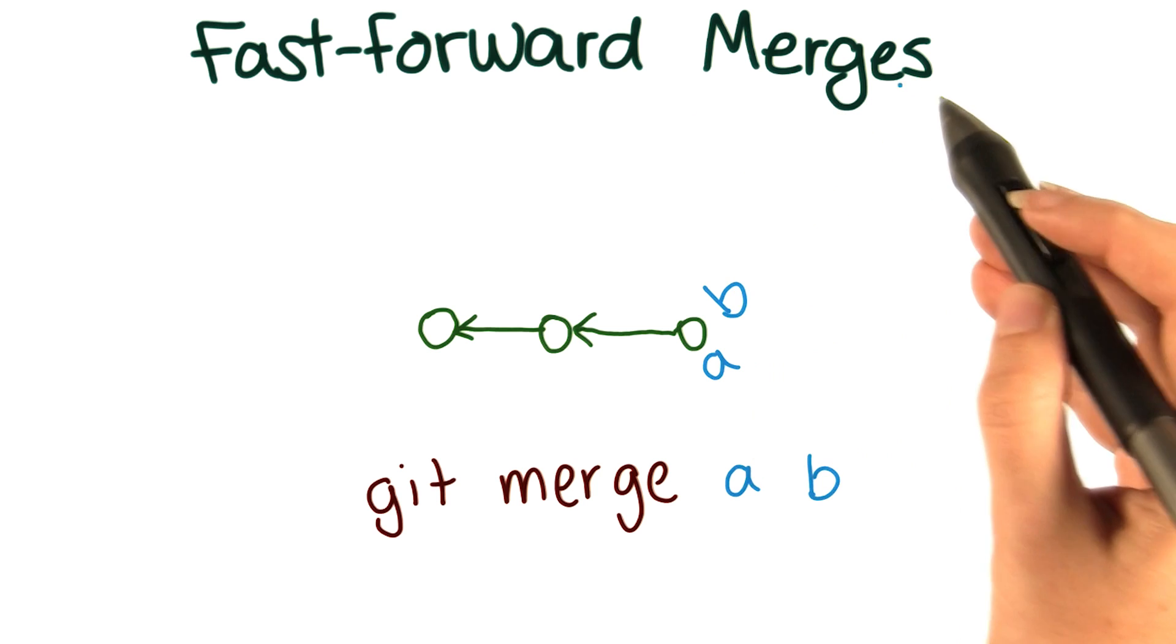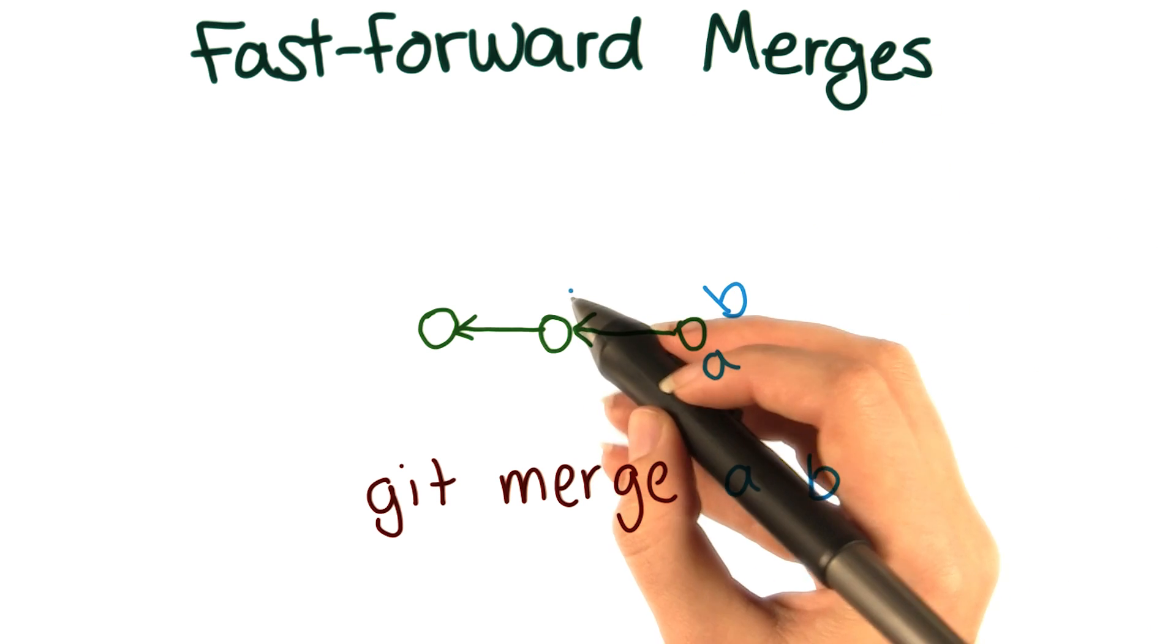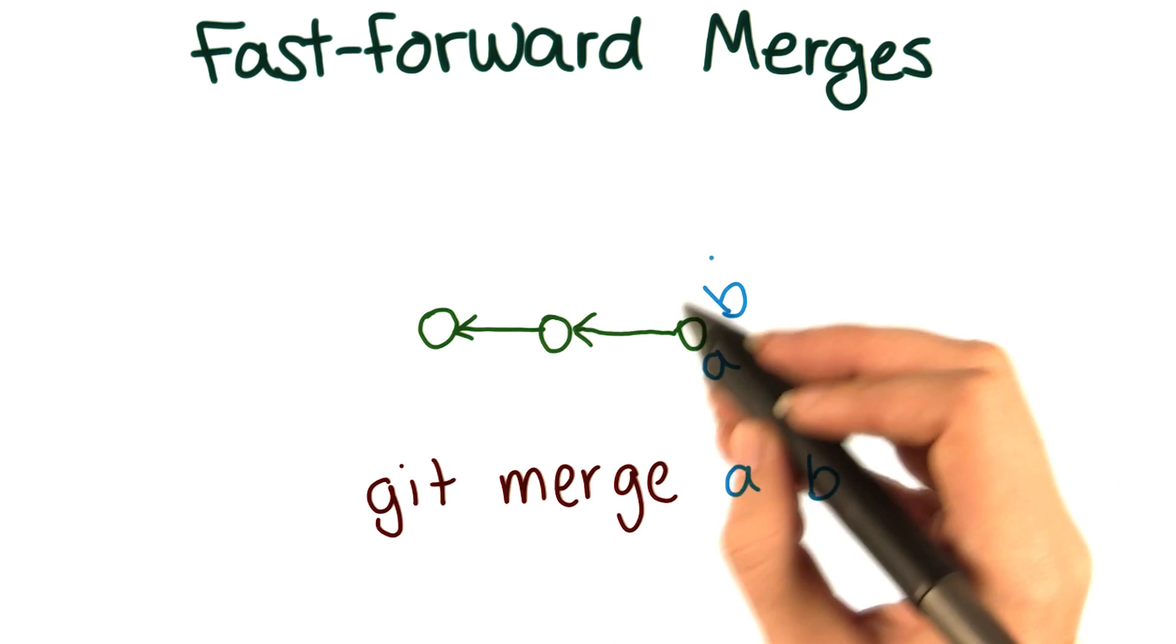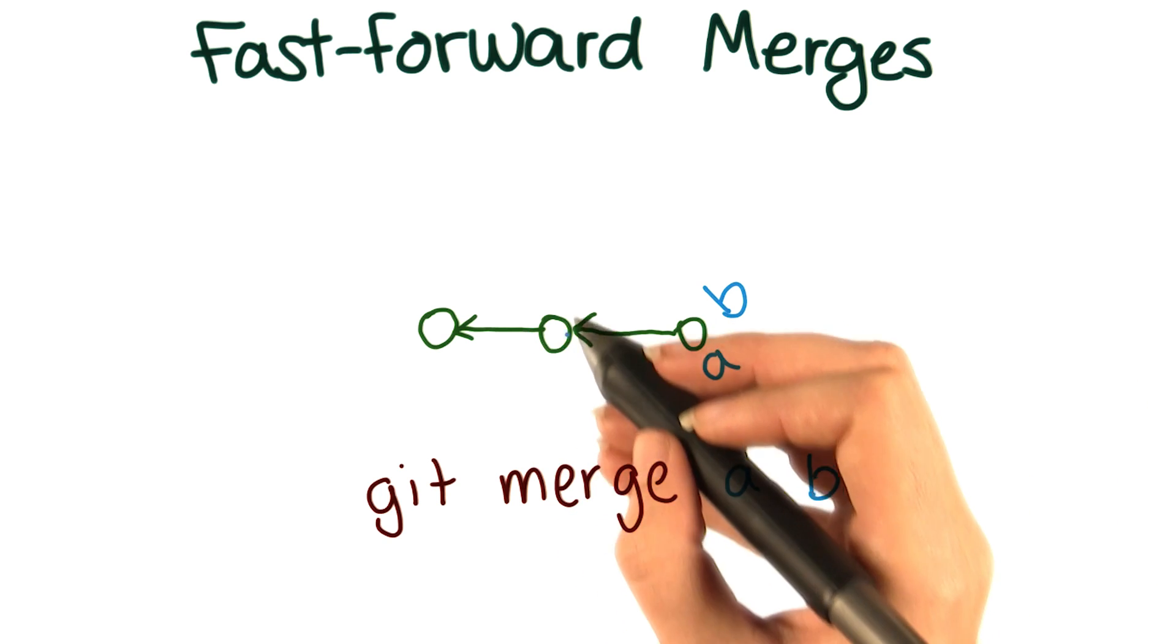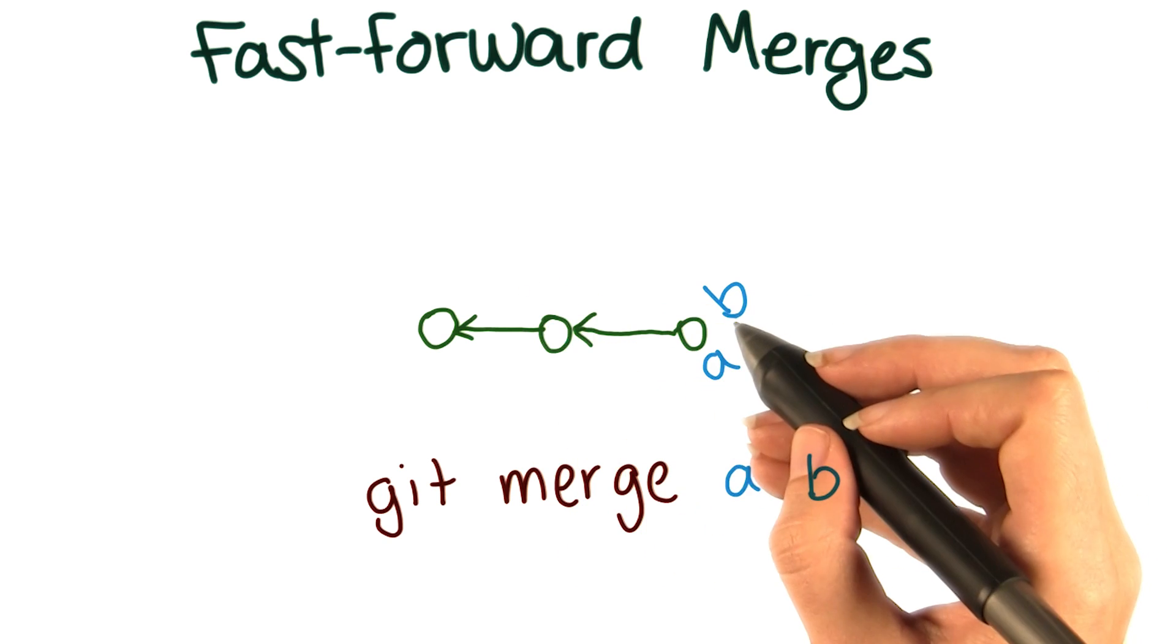Hopefully at this point, the name fast forward merge makes sense. We're taking a label from the history of a branch, somewhere in its ancestry, and moving that label forward to the tip of the branch.